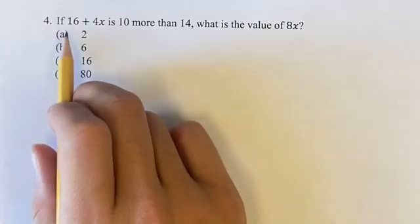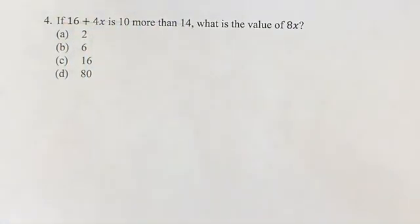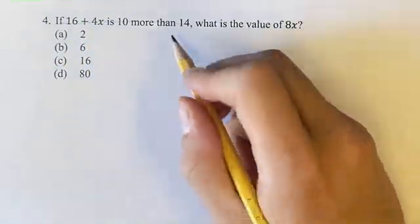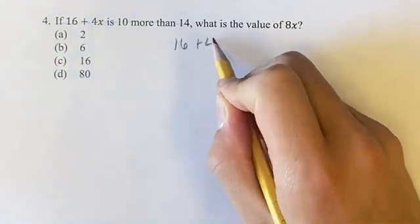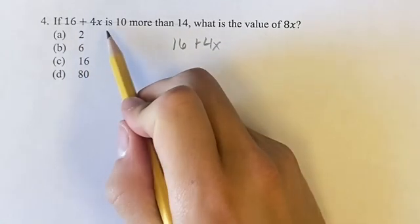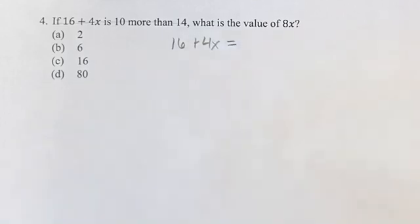So to solve for 8x, we first have to turn this sentence into a mathematical equation. So you start out with 16 plus 4x. Then we have to turn the English into mathematical symbols. So 'is' always means equals to.